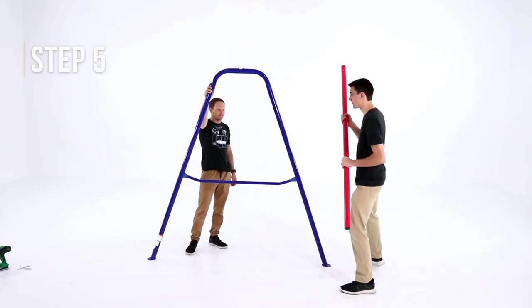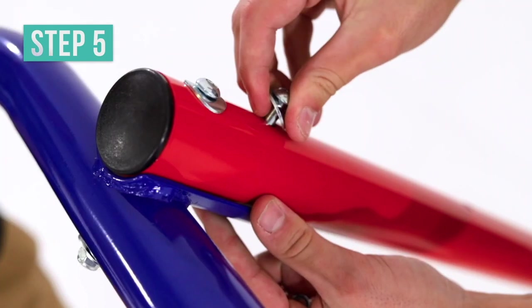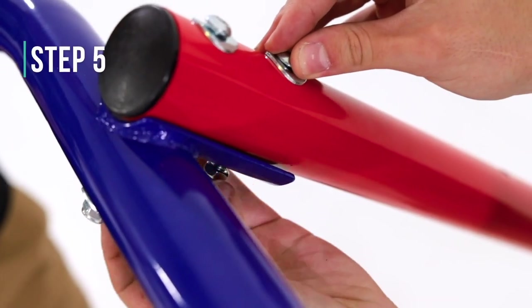Put the top tube on top of the U-frame one and make sure the round holes are facing up. Then secure and tighten it with button bolts, arc washers, and lock nuts.